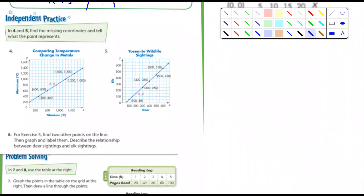Independent practice. Let's take a look. Again, we've got some charts there. It says, in 4 and 5, find the missing coordinates and tell what the point represents. So it's just like the one we just did. Here's the missing point right here, the X and the Y. So what does the X represent? Look at it. What's the X represent? That's pronounced titanium. And it's the temperature. And of course, the title of the graph helps us out. Comparing temperatures, temperature change in metals. So the X represents the temperature in centigrade of titanium. And the Y represents temperature in centigrade of what? Aluminum.